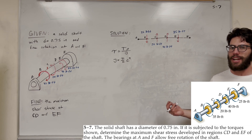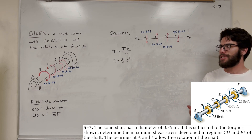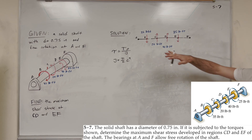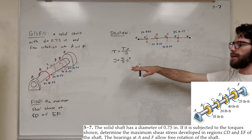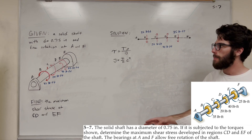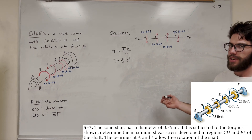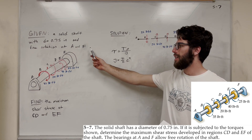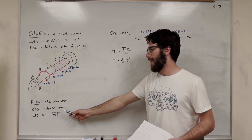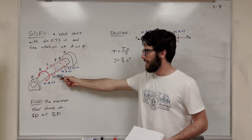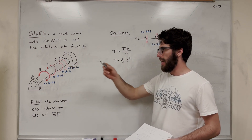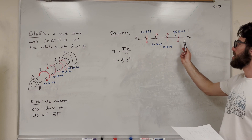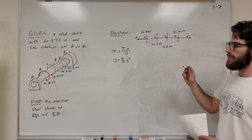What's up, and welcome back to Mechanics and Materials. Let's solve this problem. I just saw 5-6, very similar to this question, but now we're finding C, D, and E, F. We're given a solid shaft with a diameter of 0.75 inches, and we want to find basically the maximum shear stress in between C and D, and in between E and F. I went ahead and drew a 2D image of this, so let's go ahead and get started.